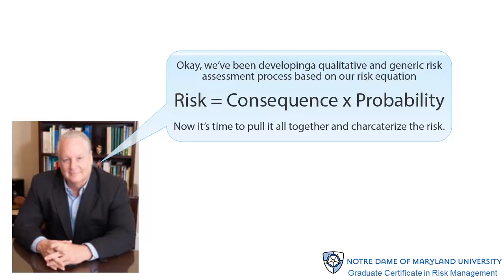By now, you have identified the risk, decomposed it into its component parts, gathered the best available evidence on these elements, and used that evidence to assign ratings to each of your consequence and probability elements. Now it is time to begin to characterize the risk you identified.